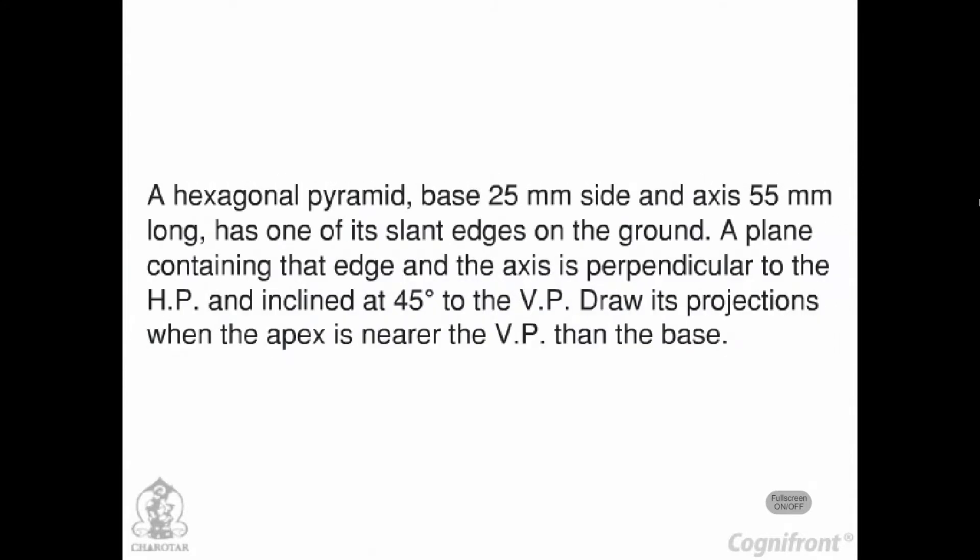A hexagonal pyramid, base 25 mm side and axis 55 mm long, has one of its slant edges on the ground. A plane containing that edge and the axis is perpendicular to the HP and inclined at 45 degrees to the VP. Draw its projections when the apex is nearer the VP than the base.